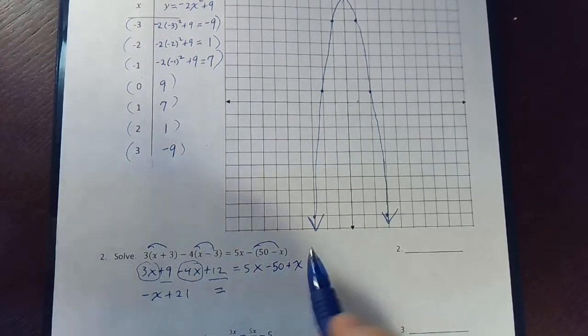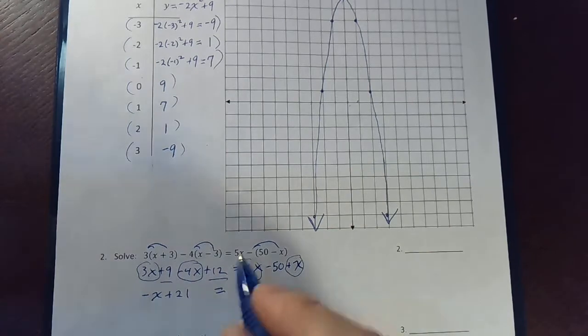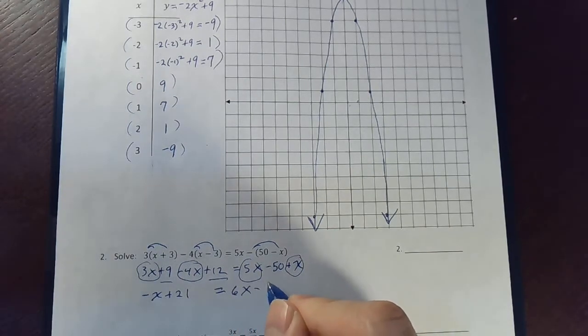Equals—this side, I'm going to add 1x and 5x to get 6x minus 50.